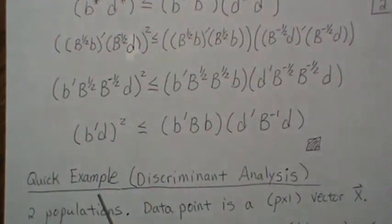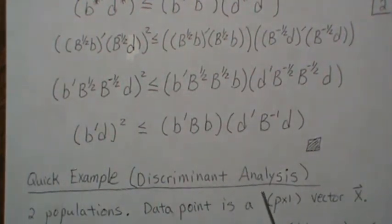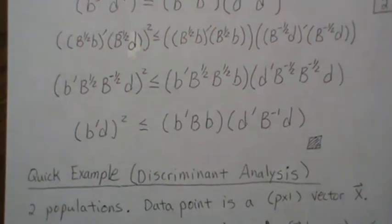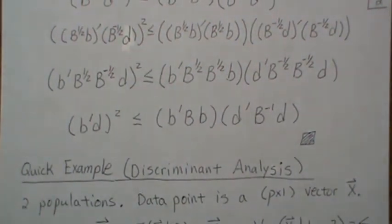And so a quick example is discriminant analysis. And discriminant analysis is you're taking multivariate data and trying to decide whether it comes from one of several populations.